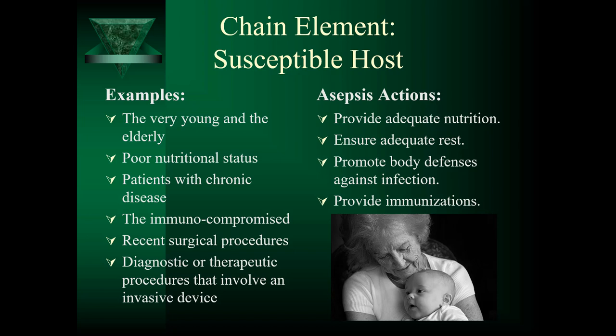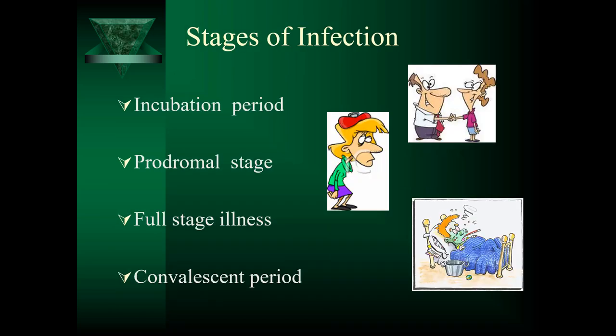Fortunately, there are many methods nurses can use to reduce that risk. There are stages of infection: incubation, prodromal, full-stage illness, and convalescent. Incubation is the time between the pathogen's entry into the body and the appearance of symptoms. During this stage the pathogen is multiplying, and the length of incubation varies depending on the organism — for example, the common cold has an incubation period of one to two days.